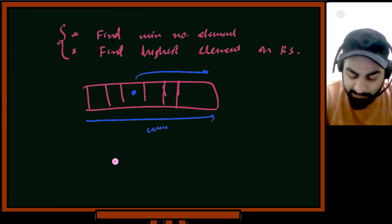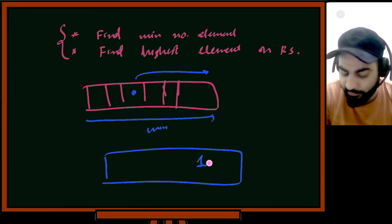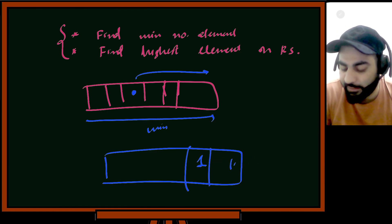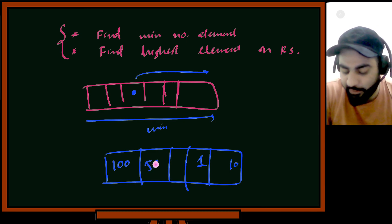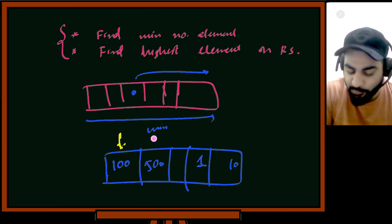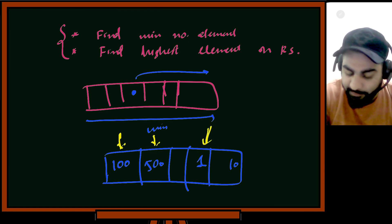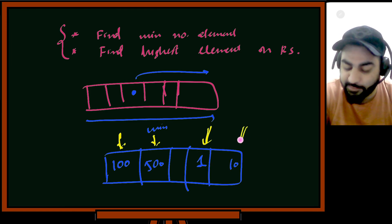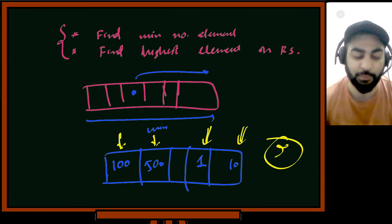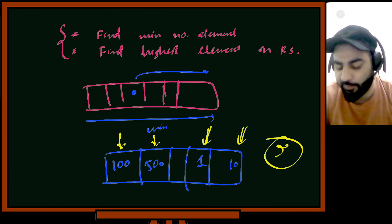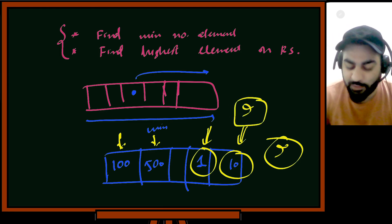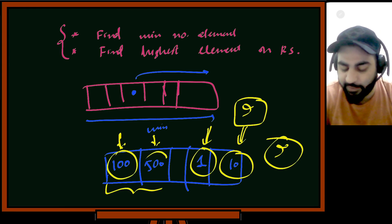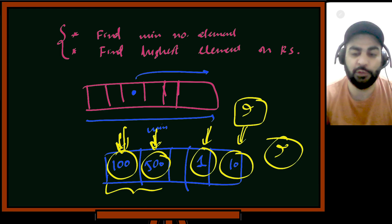Here's the problem: suppose the minimum number is 1 somewhere, and on the right-hand side we have 10. But I also have 100 here and 500 further ahead. If I bought at 100 and sold at 500, I'd get 400 profit. But by the algorithm, I find minimum number 1, then find the maximum on the right-hand side which is 10, getting only 9 return. So the actual maximum return would have been 400, but your algorithm gives only 9. Do you see the problem?